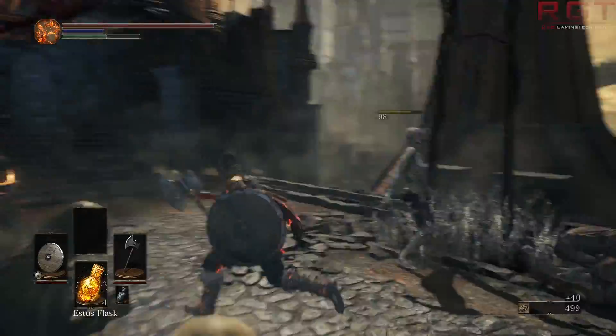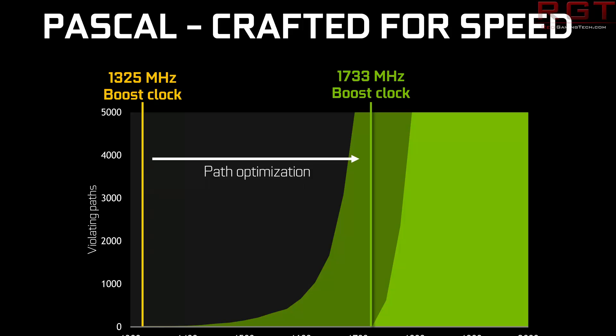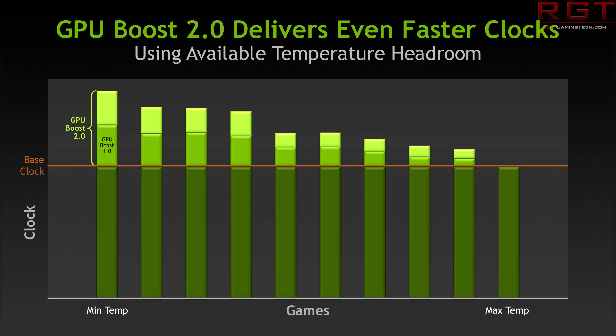Boost clocks, meanwhile, refer to the GPU's clock speed when the card is under load — in other words, being stressed. The clock speed might raise or lower dynamically based upon heat and power consumption, with the GPU doing its best to balance performance with reliability.